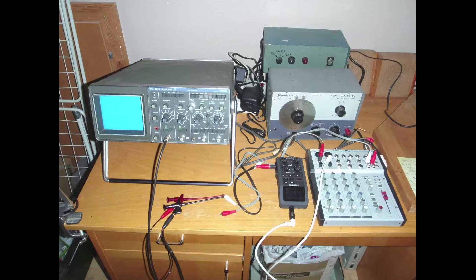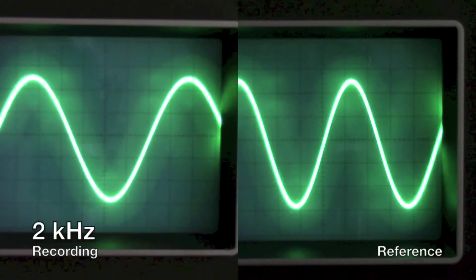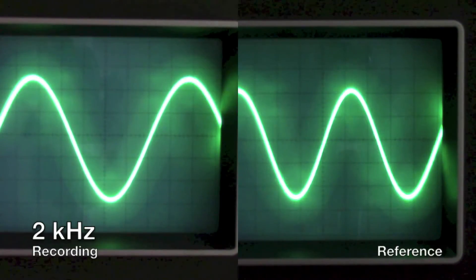We start with a sinusoid with a frequency of 2 kHz. The recordings will be displayed on the left, and the reference signal will be displayed on the right. As we see, the sinusoid looks correct at 2 kHz.